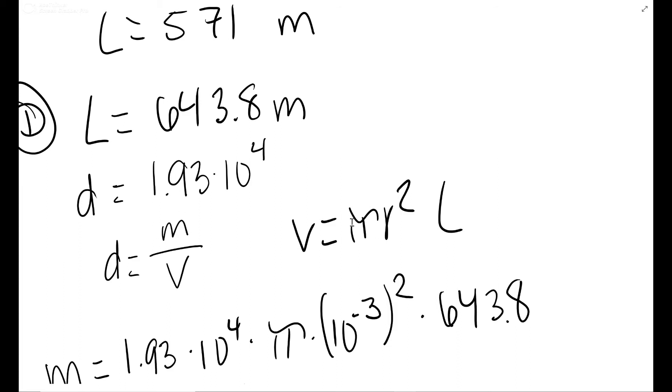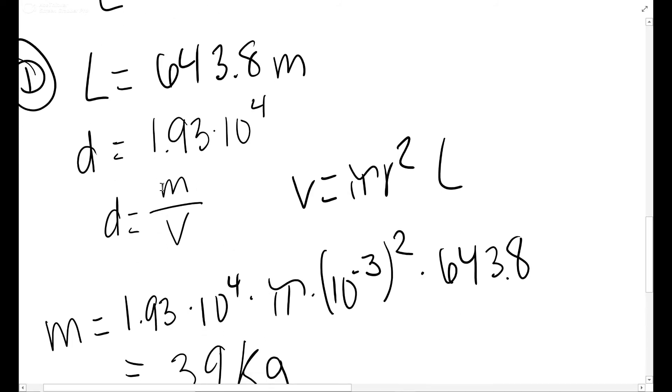Volume of a wire is basically volume of a cylinder, so you're gonna have the cross-sectional area, the area of a circle, times the length. Now we have the length, we have the radius, so nothing's a question here. You just plug it in. Mass equals density times volume.